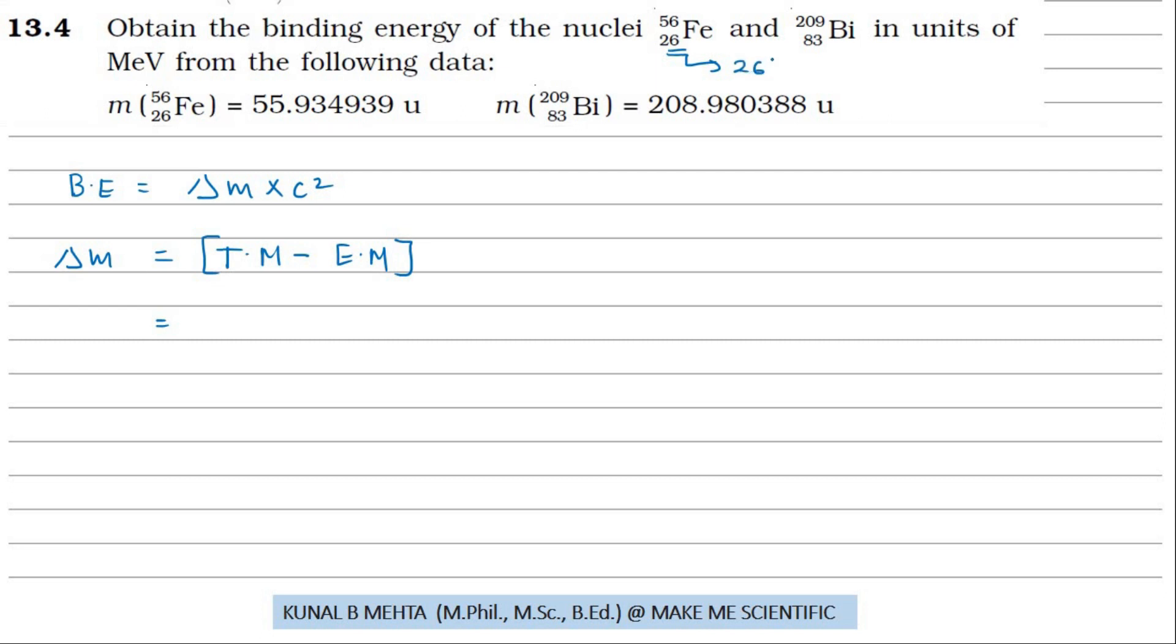Iron has 26 protons, which equals the atomic number, and the mass number minus this means 30 neutrons are in the iron nucleus. Mass of neutron times 30 plus 26 times the mass of the proton, minus the experimental mass, which turns out to be 55.934939 u, is already given to us.